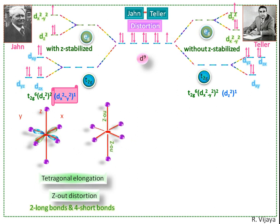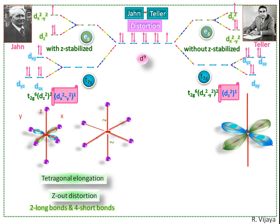Now we see this distortion using animation. This is dx²-y². This is dz². The dz² orbital lies along the z-axis.